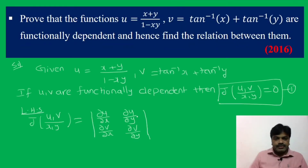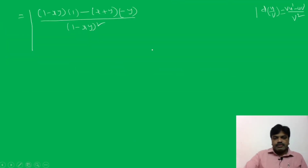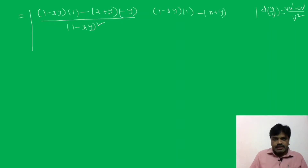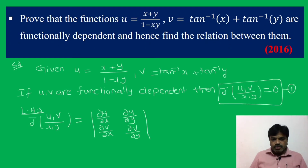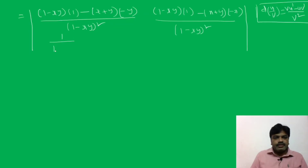With respect to y: [(1 − xy)·(1) − (x + y)·(−x)] / (1 − xy)². Derivative of 1 is 0, derivative of y is 1, so we get −x in the numerator, giving (1 + x²) / (1 − xy)². For ∂v/∂x: derivative of tan⁻¹x is 1/(1 + x²), and y is constant, so ∂v/∂x = 1/(1 + x²). Similarly, ∂v/∂y = 1/(1 + y²).